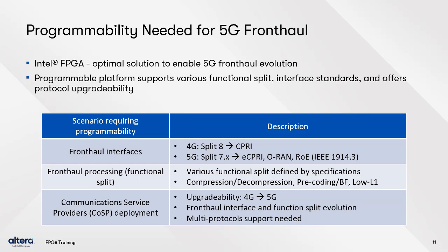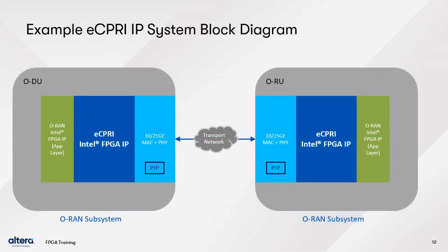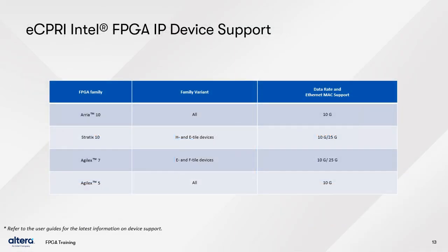This diagram shows the eC-PRE IP and how it can connect to other interface IP in a system. Here we see the O-RAN subsystem portion of an enhanced or next-generation node system. You have the eC-PRE IP interfacing with Ethernet MAC and PHYs on one side for access to the transport network, and O-RAN IP on the other side, in both the distributed and remote units. This table shows the Altera FPGAs and the Ethernet IP solutions that are supported by the eC-PRE IP.